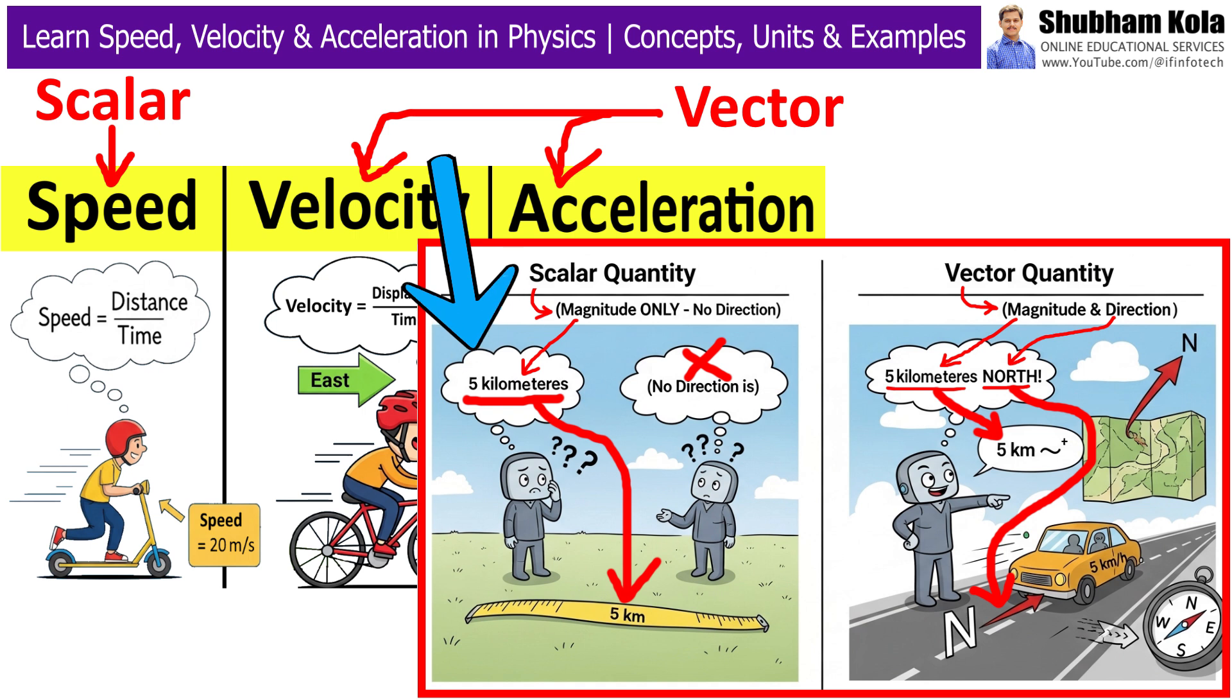For example, if I say the distance is 5 km, you know how much it is, but not in which direction.